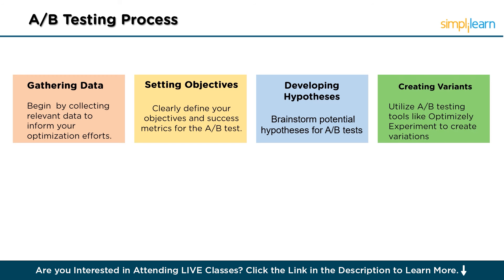The next step is creating variants. Utilize A-B testing tools like Optimizely Experiment to create variations of your website or app. Whether it's adjusting the color of a button, rearranging page elements, or implementing custom modifications, these tools make it easy to apply changes and track their impact. Before launching the experiment, conduct a trial to ensure that your variants function as intended and accurately represent the changes you want to test.